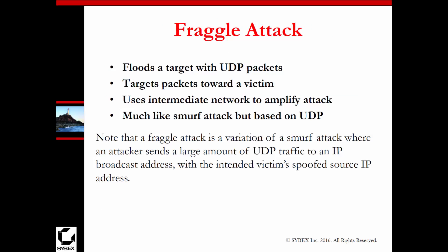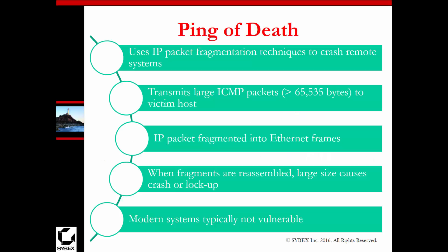A fraggle attack floods a target with UDP-type packets, pushing them toward the victim. It uses an intermediate network to amplify the attack and is very similar to a SMURF attack but uses UDP instead of TCP. A ping of death involves sending large amounts of ICMP packets to a victim host. The IP packet fragments into Ethernet frames, and when fragments are reassembled, the large sizes cause the system to crash. Most modern systems are not vulnerable to this attack anymore, but pay attention to how your firewalls are set up and whether they allow ping responses.